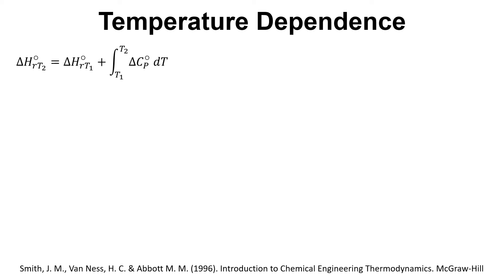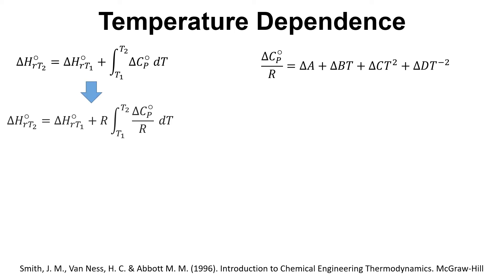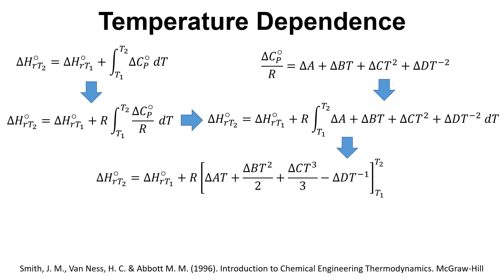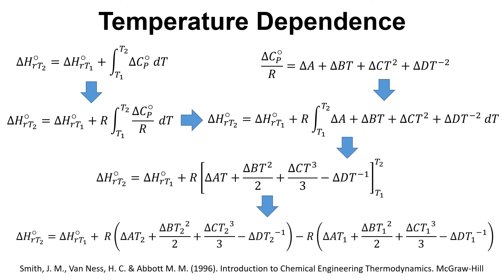Coming back to temperature dependence, we have the equation with delta Cp expressed using delta A, delta B, delta C, and delta D. Putting that temperature dependence into the form delta Cp divided by R, we can combine the two equations, perform the integration, and arrive at a final equation for the temperature dependence of the enthalpy of reaction — based on the enthalpy of reaction at the reference temperature and the delta A, delta B, delta C, delta D values — allowing us to calculate the enthalpy of reaction at T2.